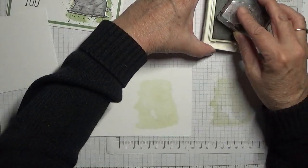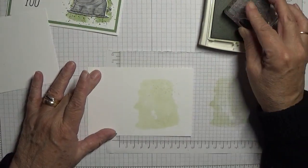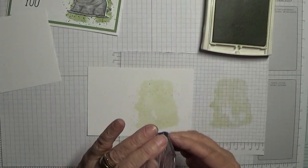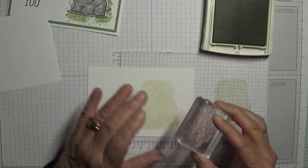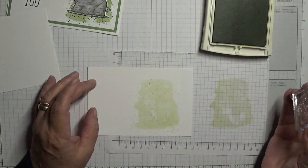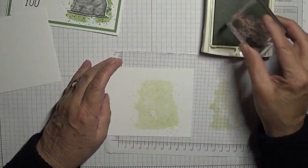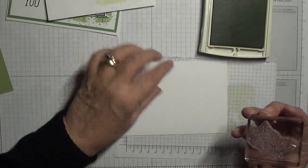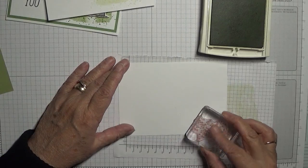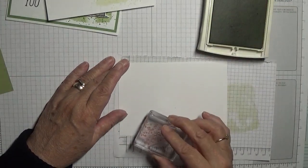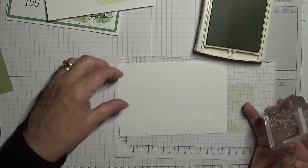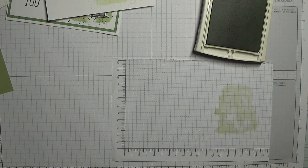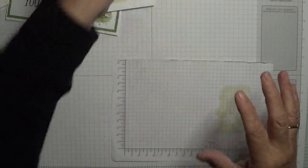And then with the pebble dash, we're just going to stamp around the outside of it, turning the stamp around as we go. One stamp in the middle. Let's do a little bit more up here. That's fine.